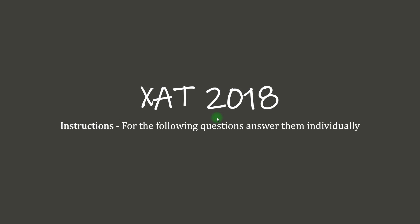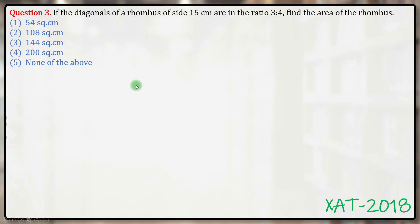Hello everyone, let's get on with this question from XAT 2018. This is a straightforward question on geometry. If the diagonals of a rhombus of side 15 centimeters are in the ratio 3:4, find the area of the rhombus.